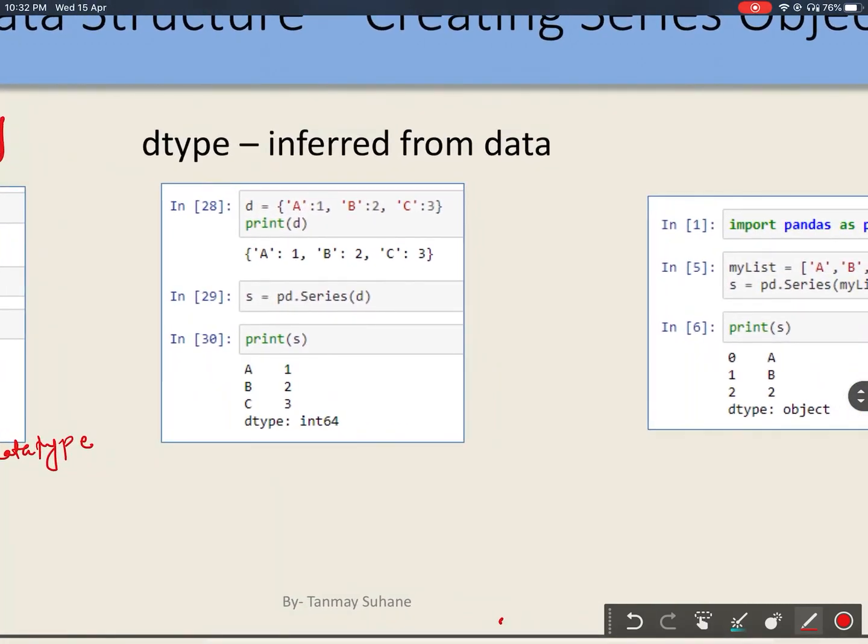Now let us see another example. Here I am creating pandas series from dictionary. So our index is abc and our data is 123. In this case Python has automatically taken the data type as int64.